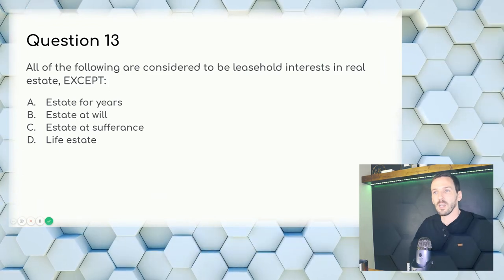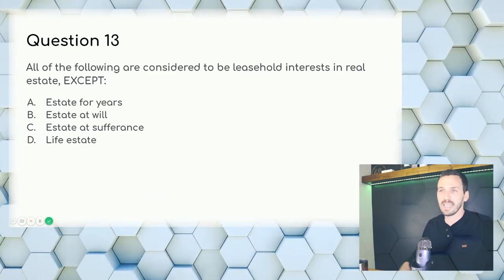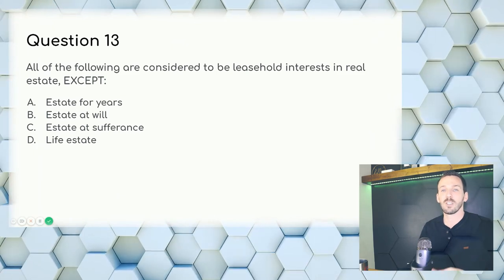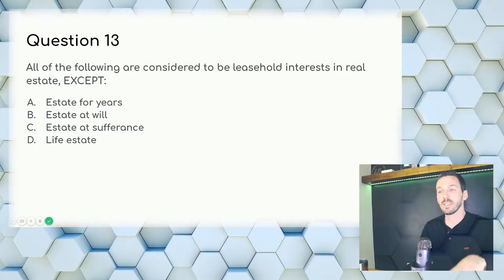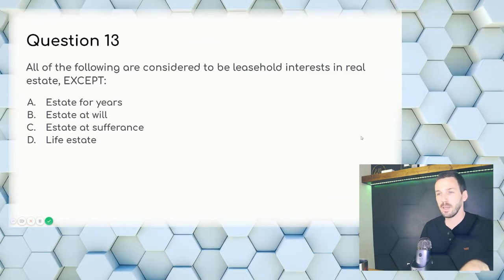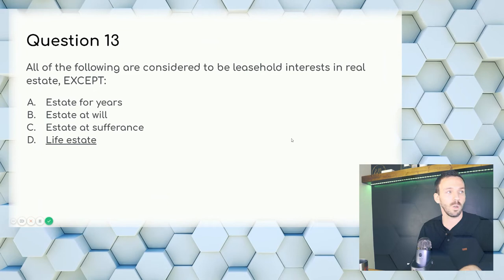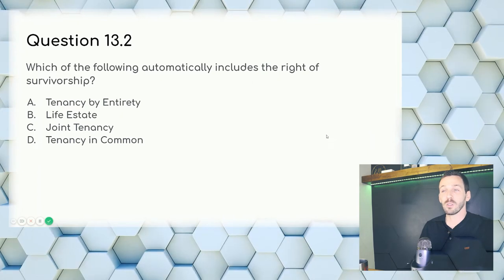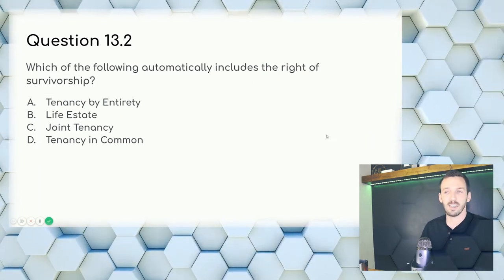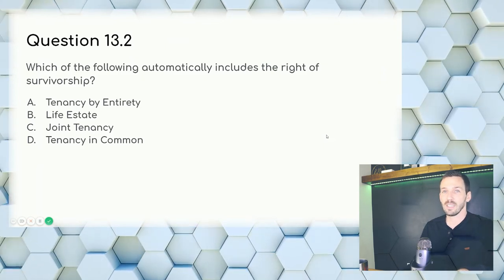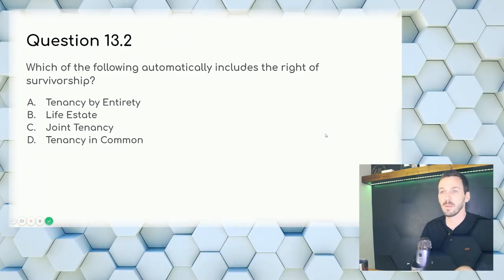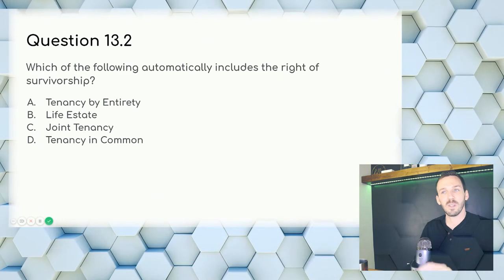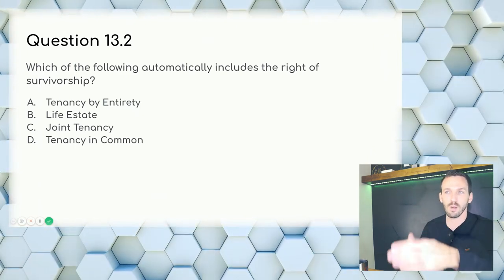Question 13: All of the following are leasehold interests except — estate for years, estate at will, estate at sufferance all have term limits. A life estate is straight-up ownership — it's freehold. Answer: D, life estate. Question 13.2: Which automatically includes the right of survivorship? This is memorization from chapter two. Answer: tenancy by the entireties.